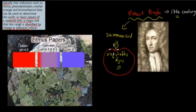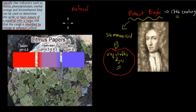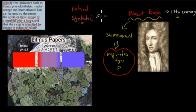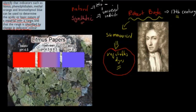These vegetable dyes, used back then by Robert Boyle, are nowadays either natural — meaning they come from nature itself — or synthetic, meaning we've made them or changed them somehow. For example, the universal indicator that you often use in class is a synthetic one, whereas litmus paper comes from a natural source.